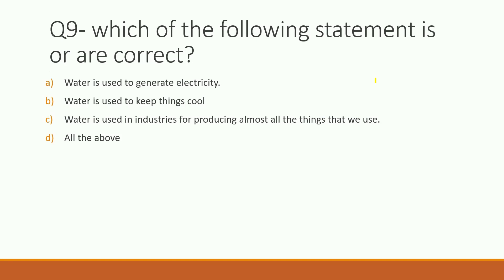Ninth question: which of the following statements is or are correct? Statement A: water is used to generate electricity. Statement B: water is used to keep things cool. Statement C: water is used in industry for producing almost all the things we use. The right answer is all of the above — A, B, and C are all correct.